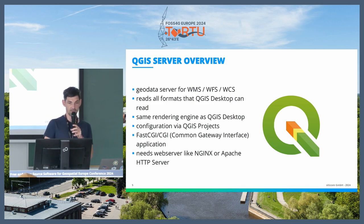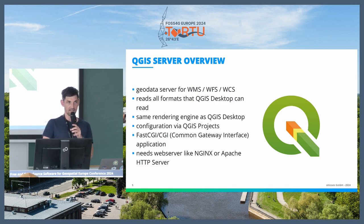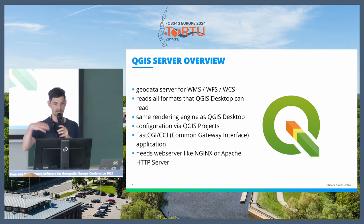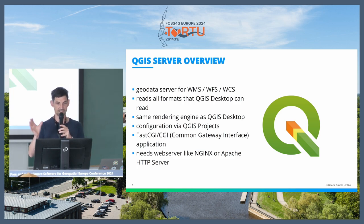QGIS Server is a geodata server for WMS, WFS, and WCS, and also OGC API features. The cool thing is it can pretty much read everything that QGIS Desktop can read, and it renders data exactly as QGIS Desktop does. This was the unique selling point for us: our planners have many sophisticated styles for domain-specific tasks, and we want them exactly the same in the web GIS, because converting styles very often loses something.